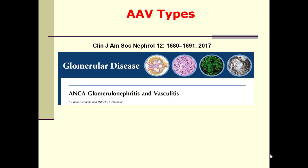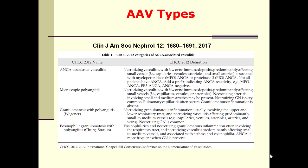Let us start with the definitions. This is a very nice review about ANCA glomerulonephritis and vasculitis. ANCA-associated vasculitis is a subtype of small vessel vasculitis. According to the International Chapel Hill Consensus Conference on the Nomenclature of Vasculitis, we have these types: microscopic polyangiitis, granulomatosis with polyangiitis — which was previously known as Wegener's granulomatosis — and eosinophilic granulomatosis with polyangiitis, or Churg-Strauss.